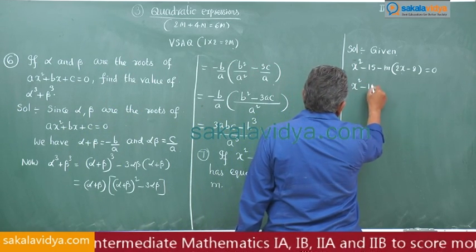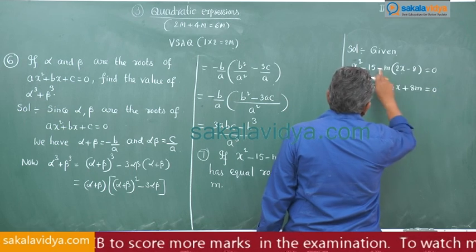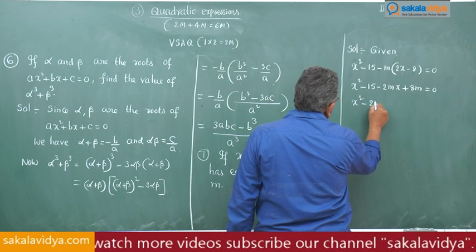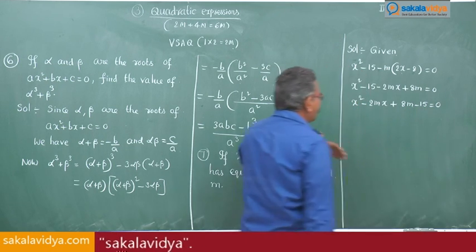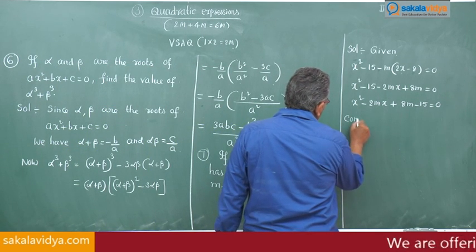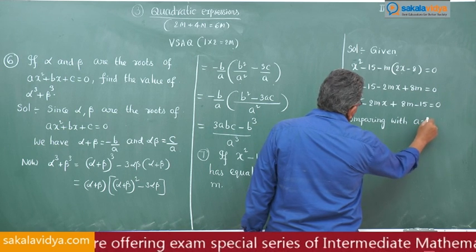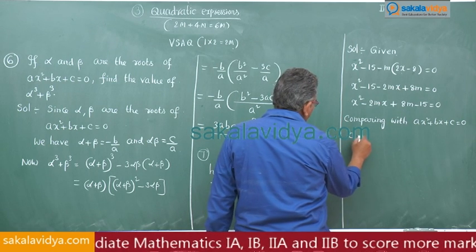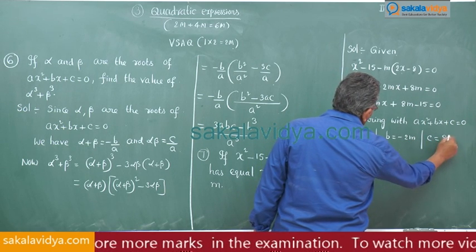So, x squared minus 15 minus 2mx plus 8m is equal to 0. This can be rewritten as x squared minus 2mx plus 8m minus 15 is equal to 0. Comparing with ax squared plus bx plus c equals 0: a is equal to 1, b is equal to minus 2m, c is equal to 8m minus 15.